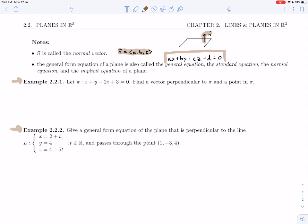Using that, let's go ahead and start with example 2.2.1. We're told here that we're given a plane π: x plus y minus 2z plus 3 equals 0, and we're asked to find a vector perpendicular to π and a point in π.